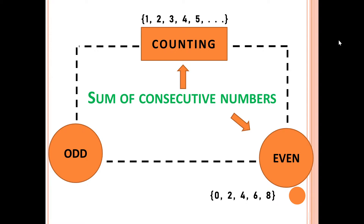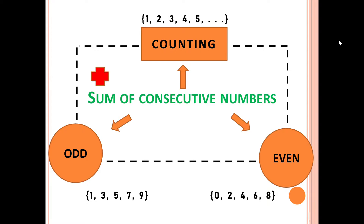On the other hand, if we're talking about the sum of consecutive odd numbers, these are the numbers that end with 1, 3, 5, or 7. So today we're going to learn the different sums of consecutive counting, even, and odd numbers.